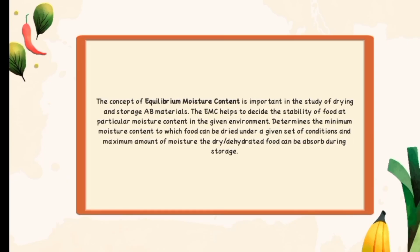What is the importance of equilibrium moisture content? The concept of EMC is important in the study of drying and storage of fruits, vegetables, and grains. The EMC helps to decide the stability of food at a particular moisture content in a given environment. The EMC values of several grains and foods have been determined by research workers and reported in literature. If exposed to air, high moisture foods lose moisture whereas low moisture foods gain moisture in humid air. EMC determines the minimum moisture content to which food can be dried under a given set of conditions, and also the maximum amount of moisture the dehydrated food can absorb during storage.